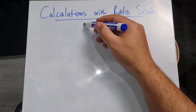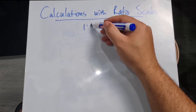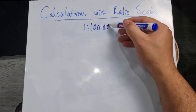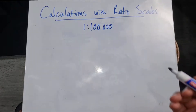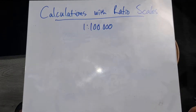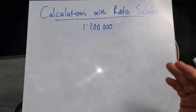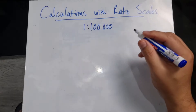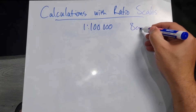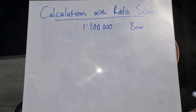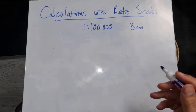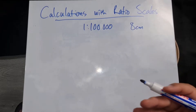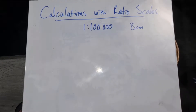Let's take for example a scale of one is to 100,000 and they tell us that the map measurement — in other words when I measure the distance on the map — it is eight centimeters. Now they want me to work out the actual distance, or the distance in reality. So how am I going to do that?